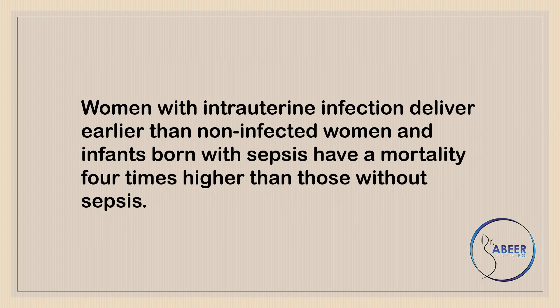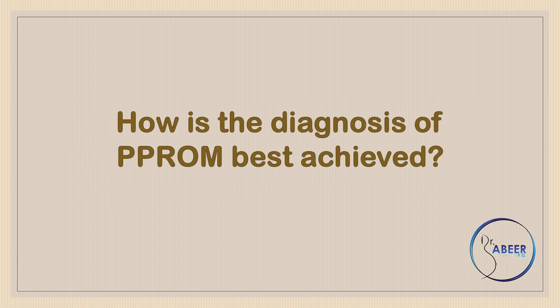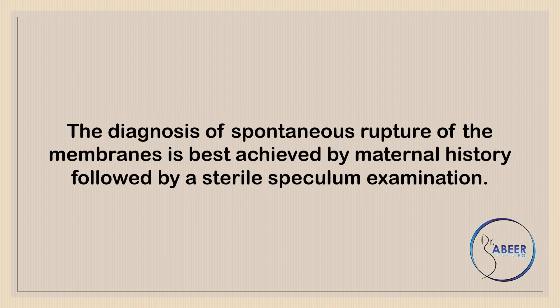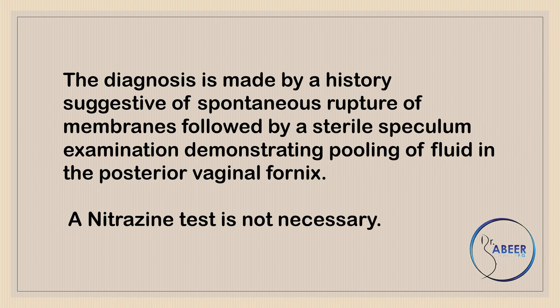Women with intrauterine infection deliver earlier than non-infected women, and infants born with sepsis have a mortality four times higher than those without sepsis. The diagnosis of a spontaneous rupture of membranes is best achieved by maternal history followed by a sterile speculum examination demonstrating a pooling of fluid in the posterior vaginal fornix.